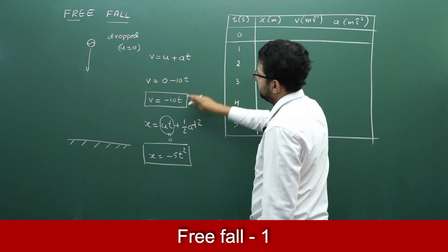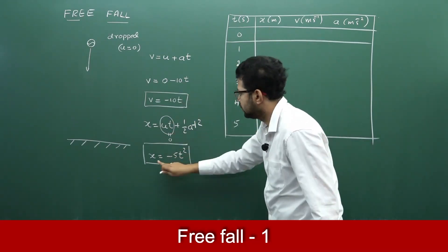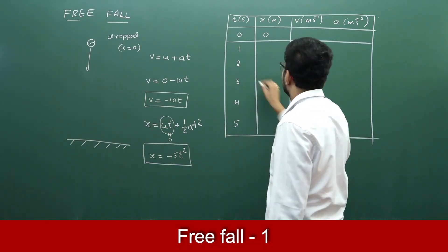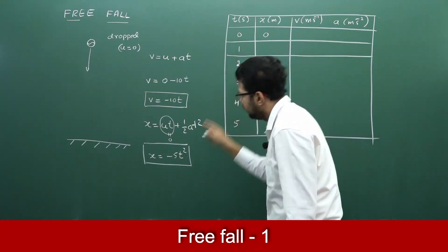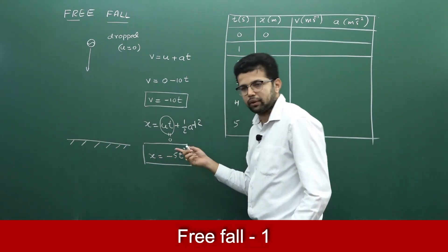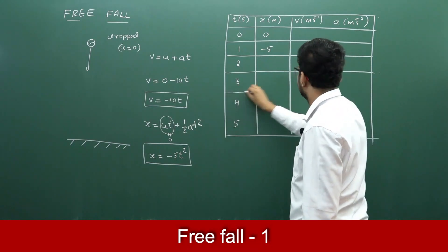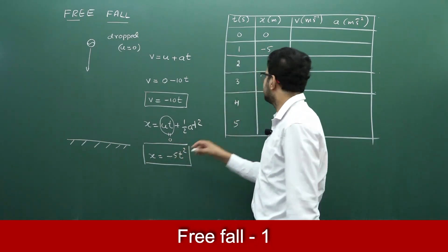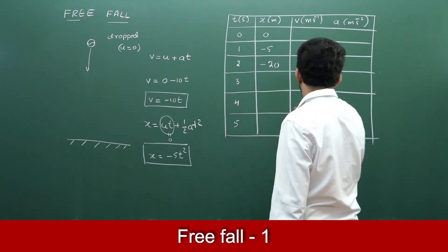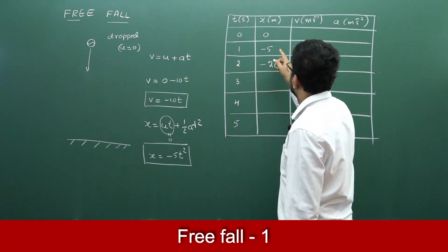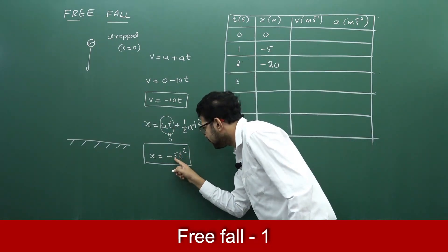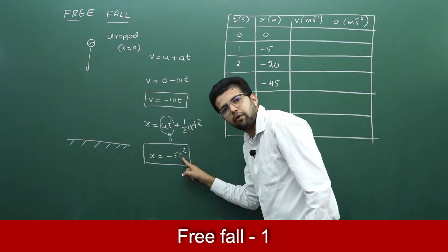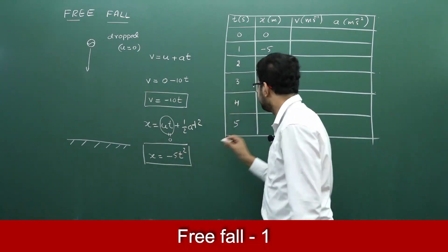When t = 0, displacement x = minus 5 × 0² = 0. When t = 1 second, x = minus 5 × 1² = minus 5. When t = 2 seconds, minus 5 × 4 = minus 20. When t = 3 seconds, minus 5 × 9 = minus 45. When t = 4 seconds, 4² = 16, 16 × 5 = minus 80.